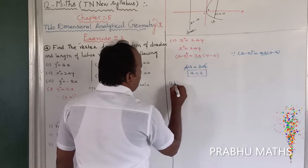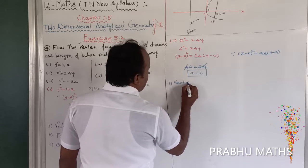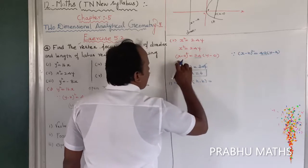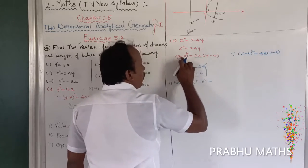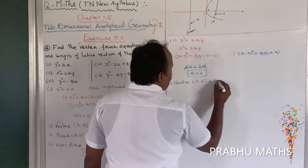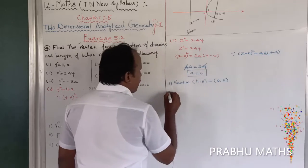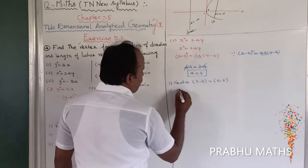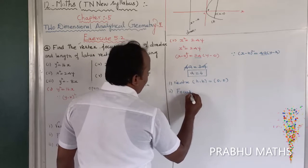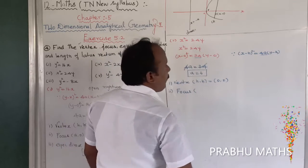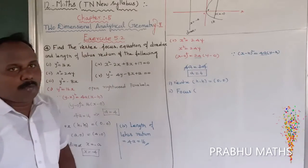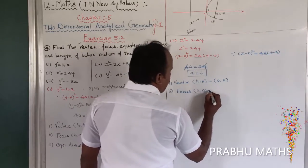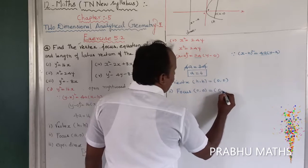Find the vertex: comparing with the general form, h comma k is equal to 0 comma 0. This is an upward open parabola, so the focus is at 0 comma a. Since a is equal to 6, the focus is 0 comma 6.